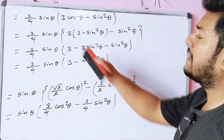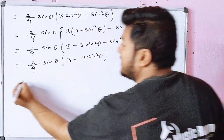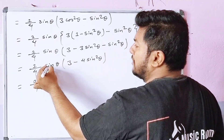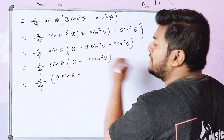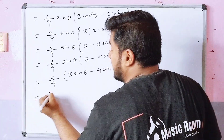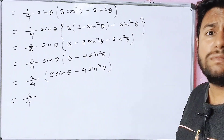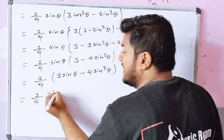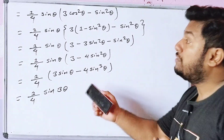Simplifying: 3 sin squared theta minus 4 sin squared theta gives us 1 by 4 sin theta into 3 minus 4 sin squared theta. This equals 1 by 4 into sin 3 theta. Therefore the expression equals 1 by 4 sin 3 theta, which completes the proof.